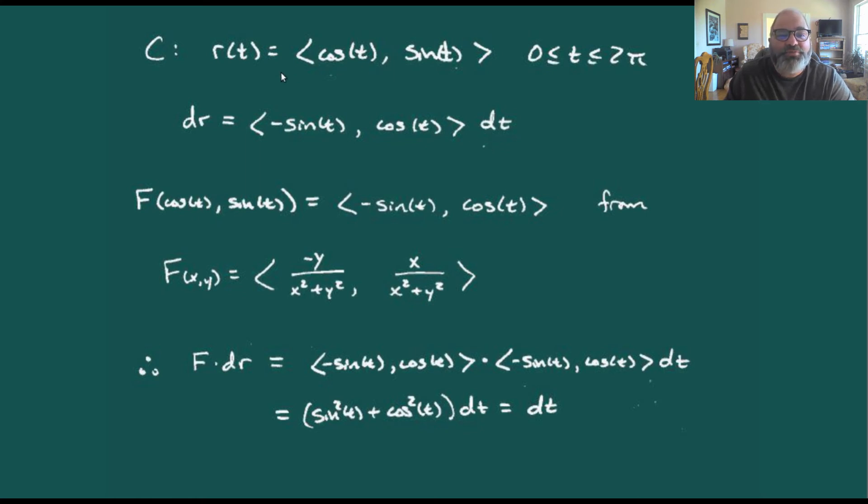We take this parameterization and plug it into our vector field, which was minus y over x squared plus y squared, x over x squared plus y squared. The x squared plus y squared, by our trig identity, just becomes one. So on the curve itself, we just end up with minus sine t and cosine t.